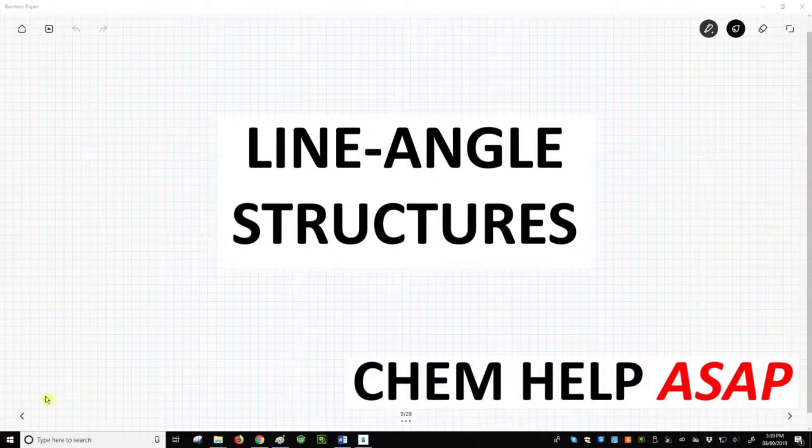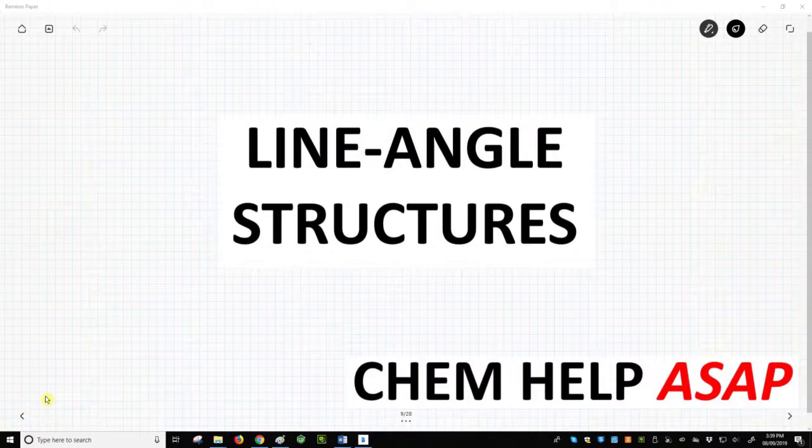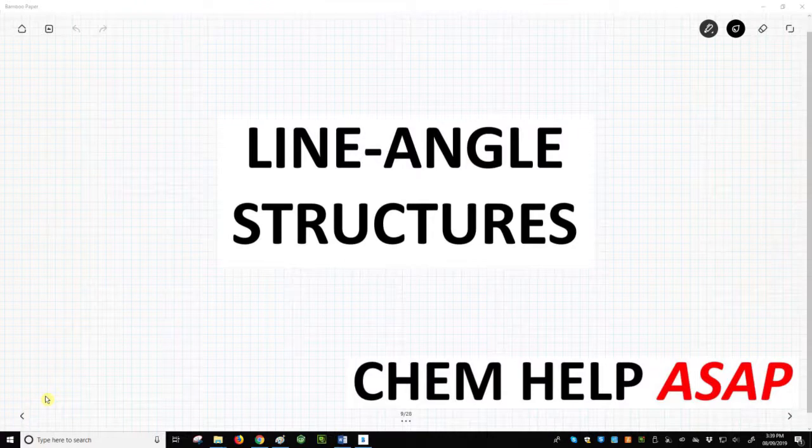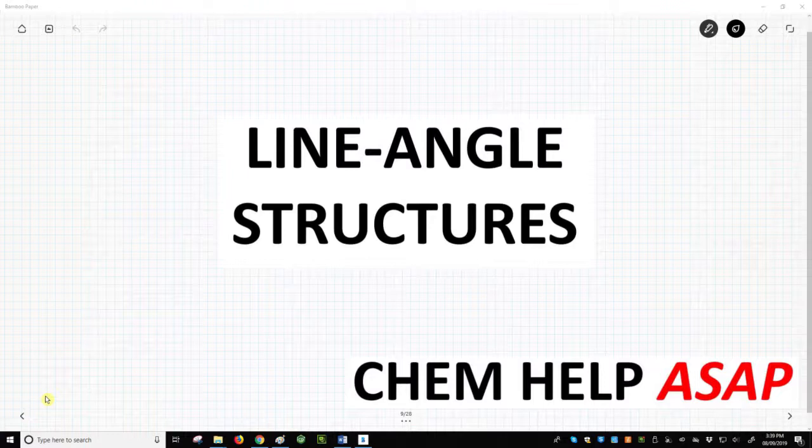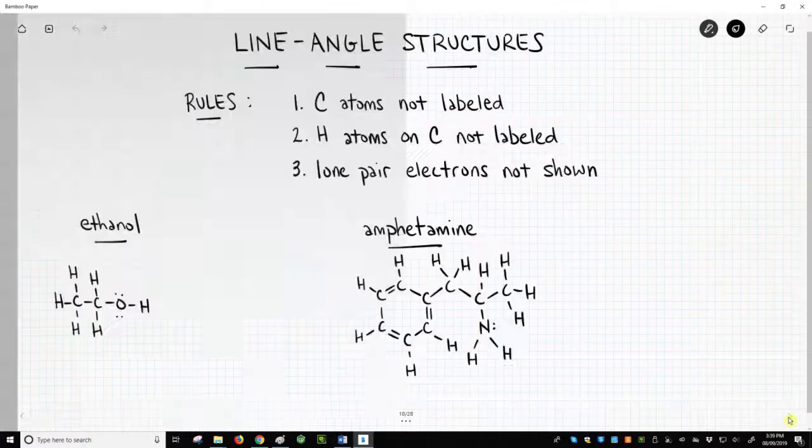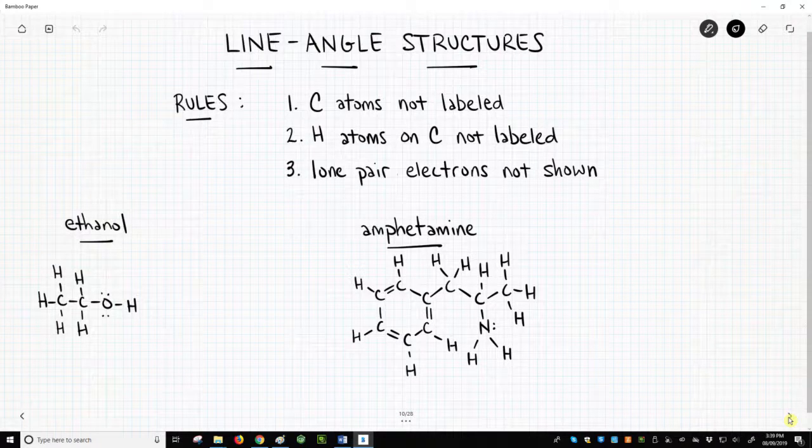Yes, we can use line-angle structures, sometimes called skeletal structures. Line-angle structures are like a shorthand Lewis structure that relies upon the octet rule to fill in missing details, namely hydrogens and lone pairs.